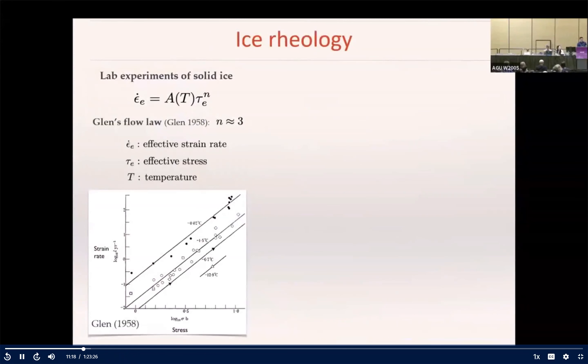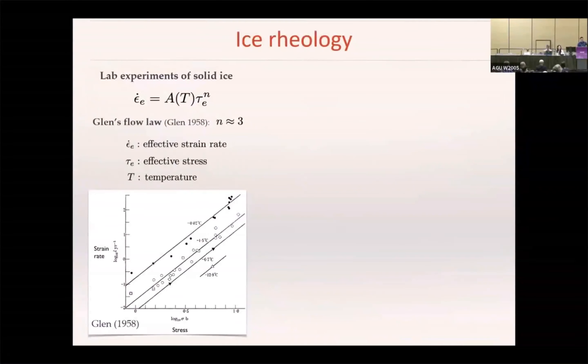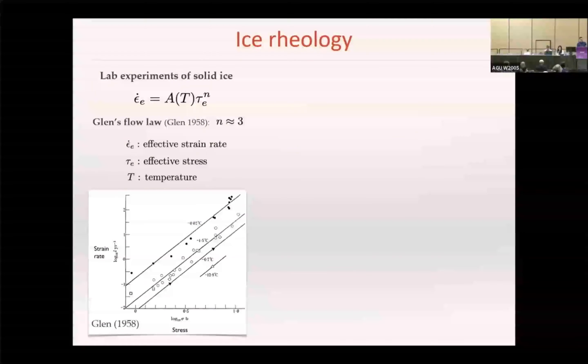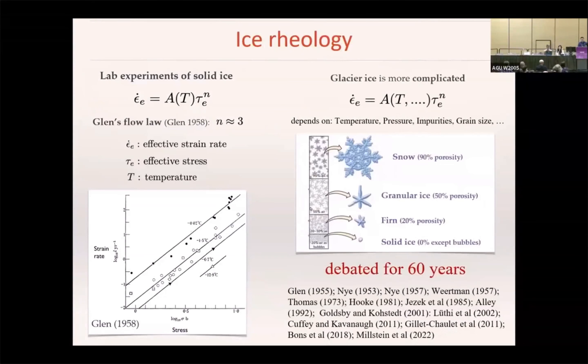A simple relation to describe the solid ice rheology is the Glen's Flow law, which has been widely used in ice sheet models. However, the rheology of glacial ice could be much more complicated, and it remains under debate.